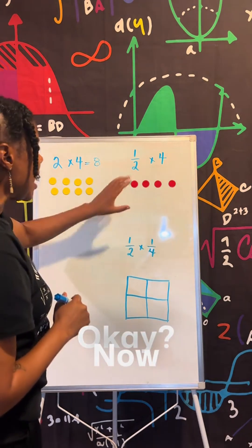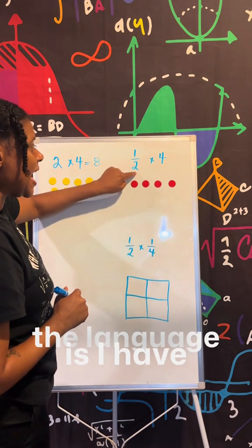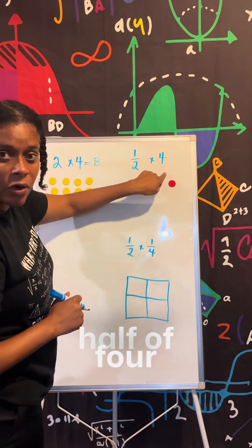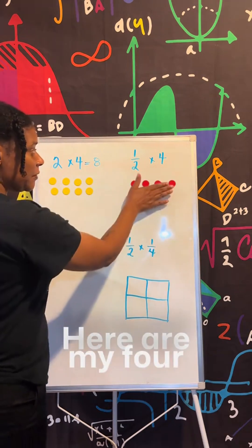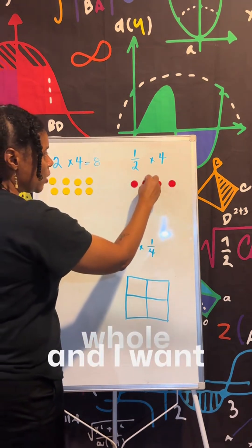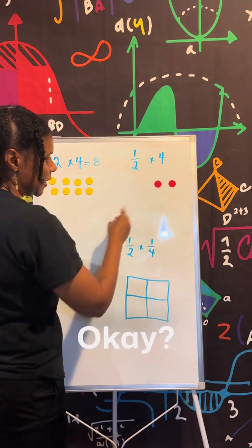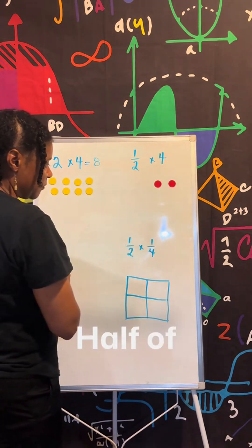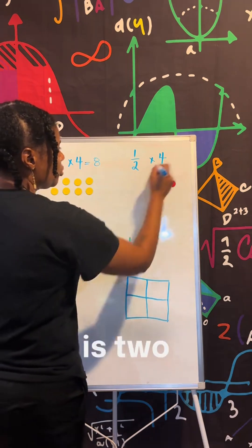OK, now the language is I have half of four. I have half of these. Here are my four whole and I want half of them. OK, so I'm left with two. Half of four is two. Pretty straightforward.